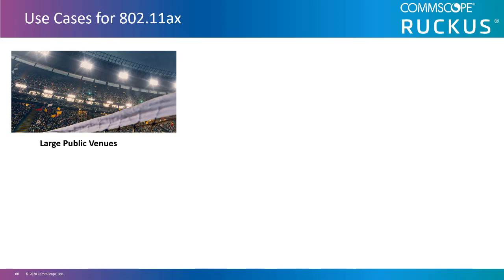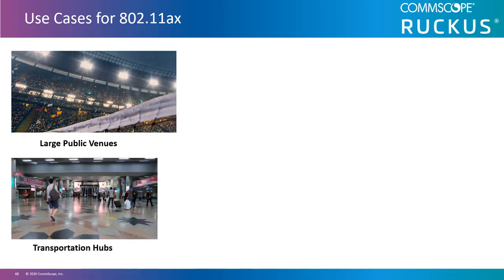The 802.11ax advancements around OFDMA, 1024 QAM, OBSS coloring, and faster PHY rates will make it easier for large public venue owners to create new business opportunities by offering enhanced services to guests. Transportation hubs — public transportation stations also offering public Wi-Fi — similarly have high densities of people attempting to connect to the network simultaneously.